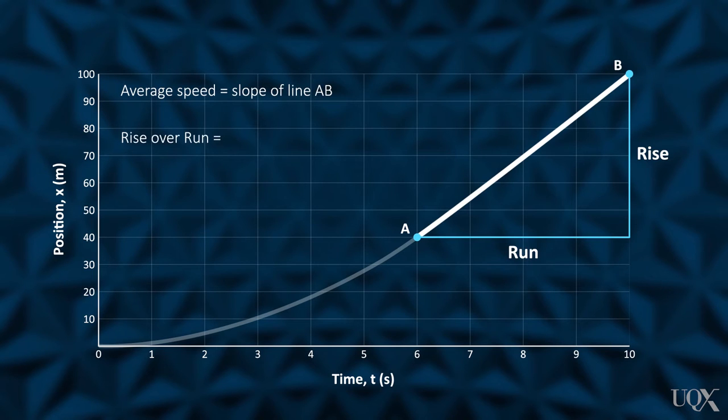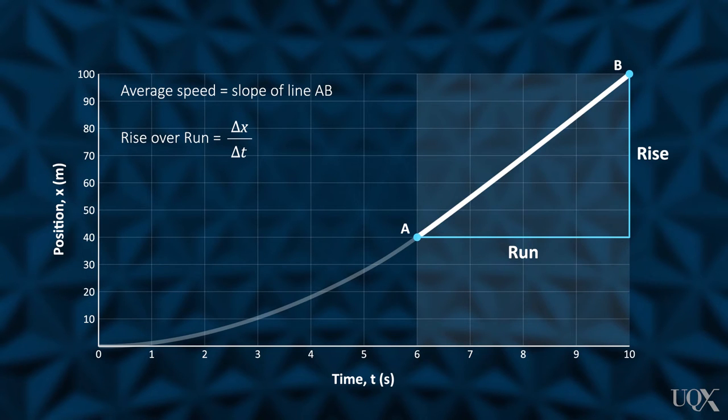This graph shows the position over time of a sprinter completing a 100-meter race. From 6 seconds to 10 seconds, we can easily measure the speed. In this example, we measure the change in position as 100 minus 40 equals 60 meters, and the change in time, 10 minus 6 equals 4 seconds. So the average speed equals 60 divided by 4 equals 15 meters per second.